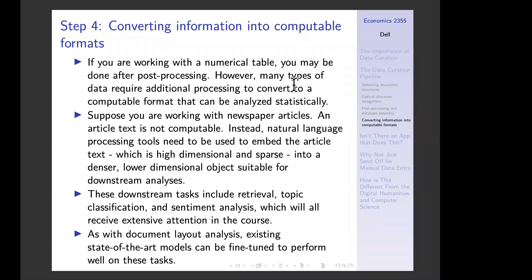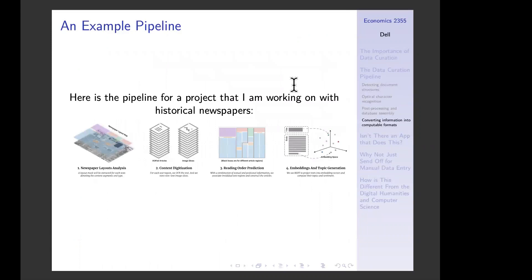Finally, you need to convert information into computable format. If you're just working with a table, you may essentially be done after the previous step. But if you're working with newspaper articles, the text is not a computable object — you need to use NLP to embed the article text, which is high-dimensional and sparse, into a denser, lower-dimensional object suitable for downstream analyses like retrieval, topic classification, and sentiment analysis.